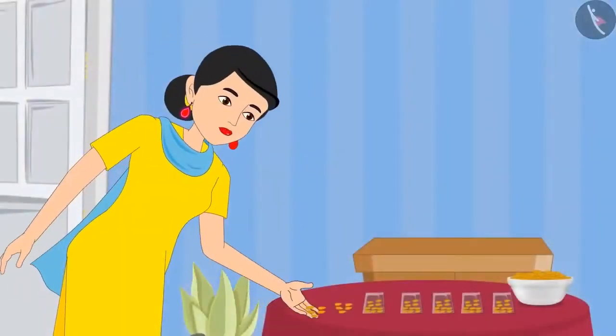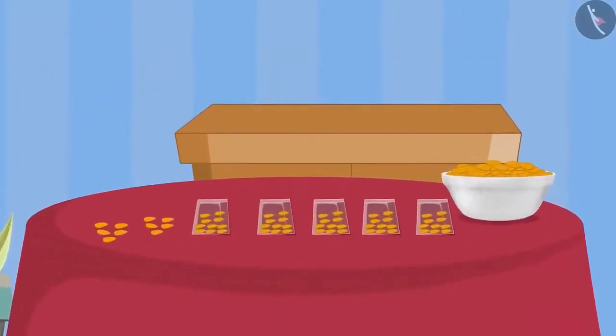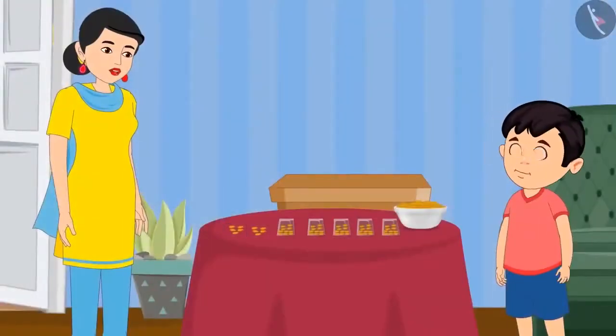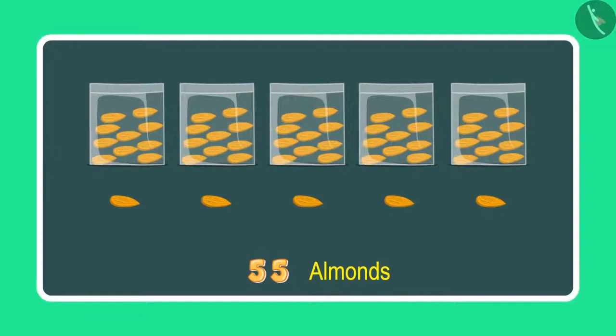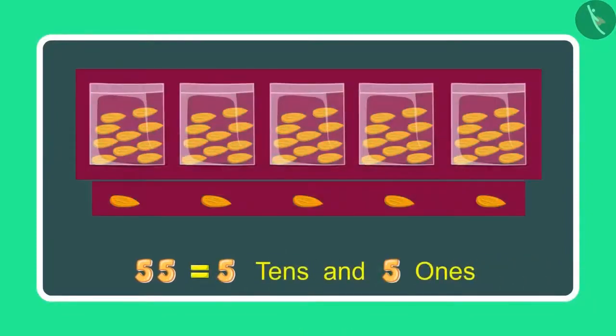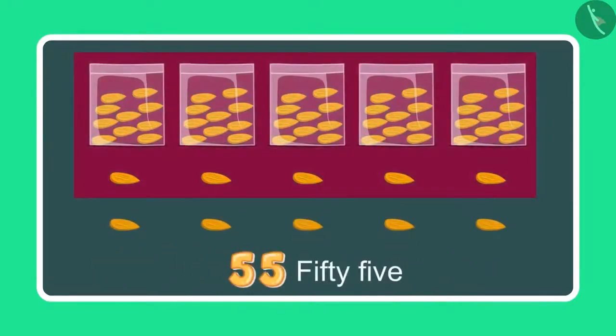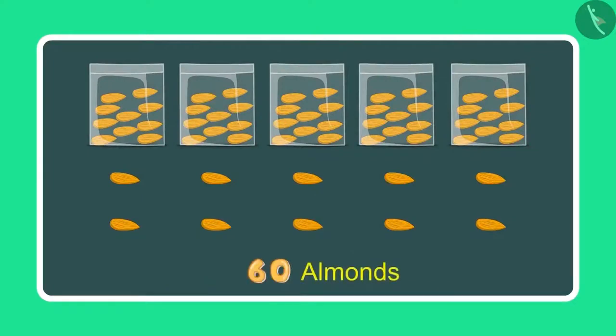Chotu, you are absolutely correct. Chotu's mother has given him some more almonds. Let us see what he is doing now. Mummy, these are 5 more almonds. Yes Chotu. Can you now count and tell me how many almonds you have in total? To begin with I had 55 almonds which means 5 tens and 5 ones and now 5 more ones. So after 55 comes 56, 57, 58, 59 and 60. This means 60 almonds.